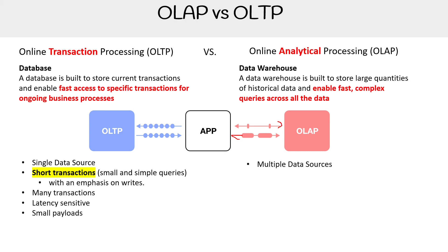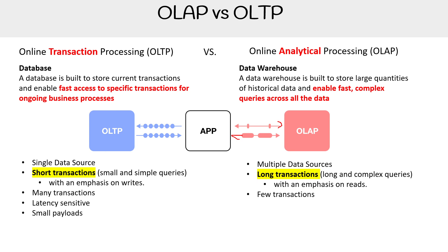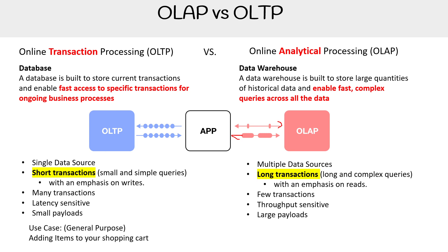On the OLAP side, we have multiple data sources — you're ingesting data — long transactions, long and complex queries with an emphasis on reads, fewer transactions, throughput sensitivity, and large payloads. A use case for OLTP would be adding items to your shopping cart, while a use case on the analytics side would be generating reports.